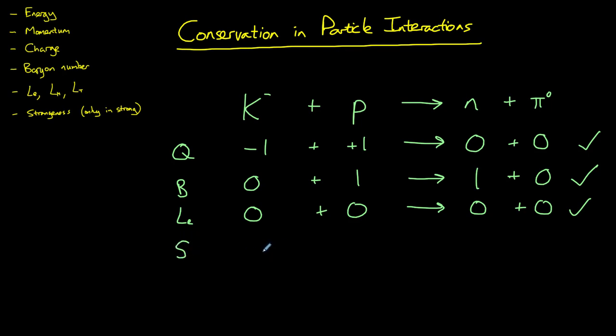This is a strong interaction so strangeness must be conserved. Well a kaon has a strangeness of minus one. A proton has no strangeness at all neither does a neutron and neither does a pion. So this interaction is not possible via the strong force at least because strangeness is not conserved.